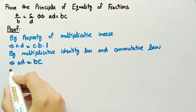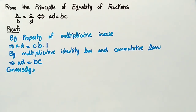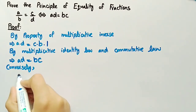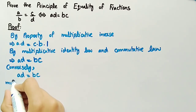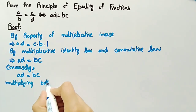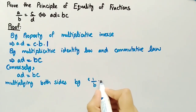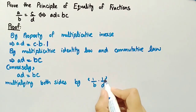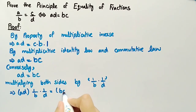Now we will prove its converse. Conversely, consider that a·d = b·c. Now by multiplying both sides by (1/b)·(1/d), we get a·d·(1/b)·(1/d) equal to b·c·(1/b)·(1/d).